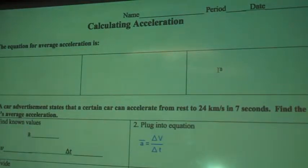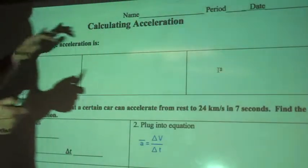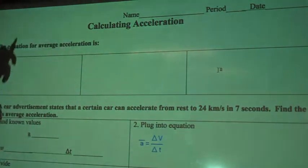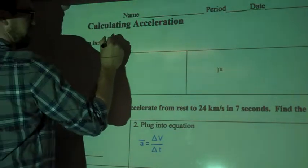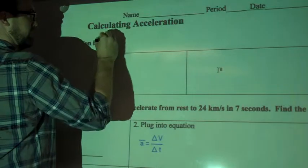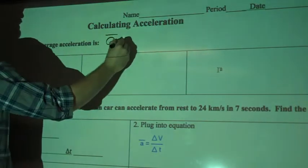So we're talking about calculating acceleration. The equation for average acceleration is, so it's going to be acceleration, and to denote the average, we're going to put a line over it like that, equals